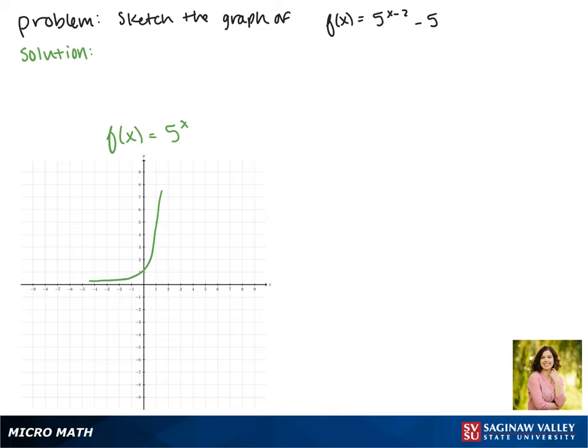Since there are no reflections in the function we're trying to graph, we'll start by looking at translations. Since we're subtracting 2 in the exponent, that means our function moves two spaces to the right.